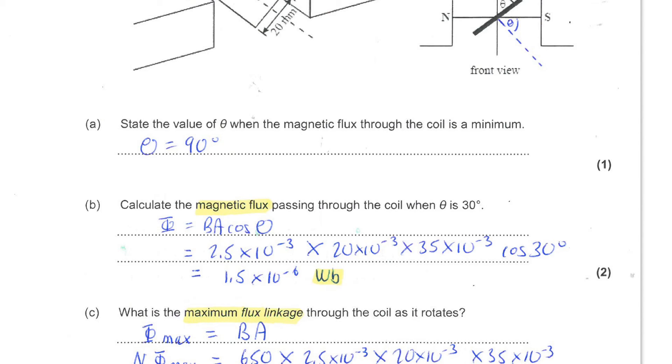Finally, you're asked for the maximum flux linkage through the coil as it rotates. Now, the maximum flux linkage will correspond to when the coil is sitting vertically and the area, the full area, is facing the field lines like that.